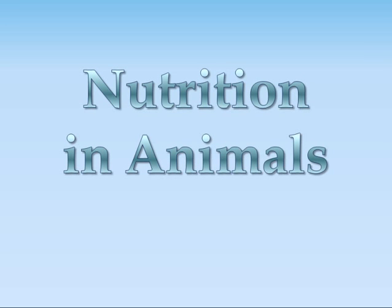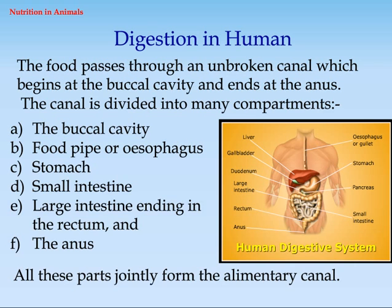Nutrition in Animals. Digestion in Humans: the food passes through an unbroken canal which begins at the buccal cavity and ends at the anus. The canal is divided into many compartments.